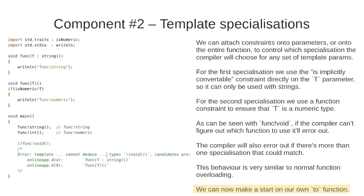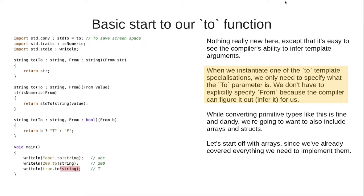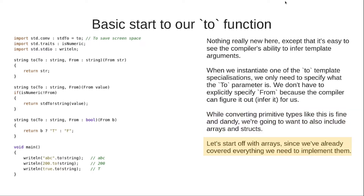We can now make a start on our own to function. There's nothing really new here except it's easy to see the compiler's ability to infer template arguments. When we instantiate one of the two template specializations you only need to specify what the To parameter is. You don't have to explicitly specify what From is because the compiler can figure it out — this is also known as inferring it. While converting primitive types like this is fine and dandy, we're going to want to also include arrays and structs, so let's start with arrays.